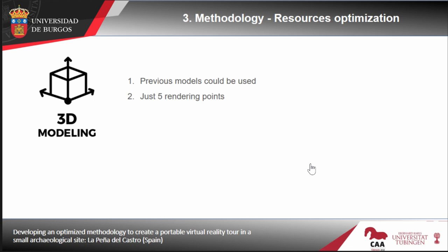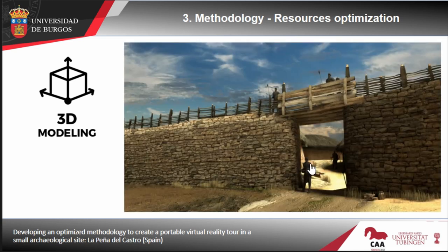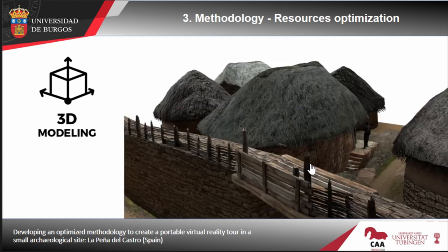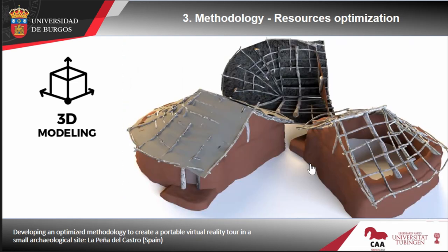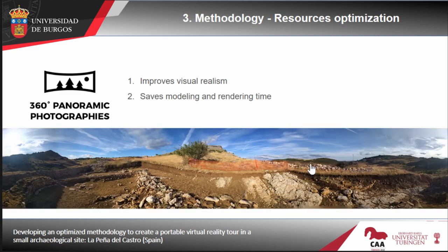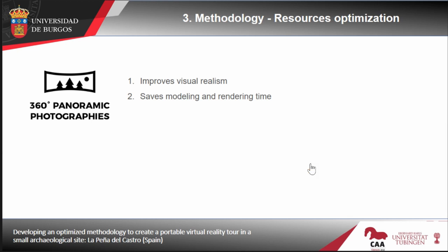To save time, we could use our existing models and we only needed five rendering points in this tour — very useful given the lack of time and funding. Using portable virtual reality, we just need some renders, which is much easier compared to high-end virtual reality. We had models of the walls, constructions, and houses. All these models were easy to adapt for portable virtual reality, and we decided to mix them with panoramic views, which we thought would improve visual realism and save a lot of time in the rendering process. So we made five panoramic views mixed with five renders.